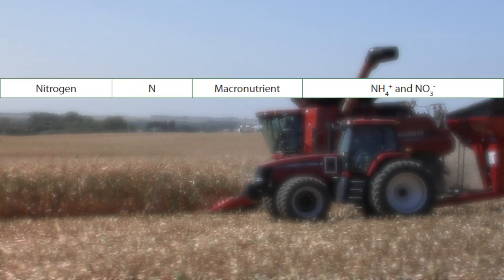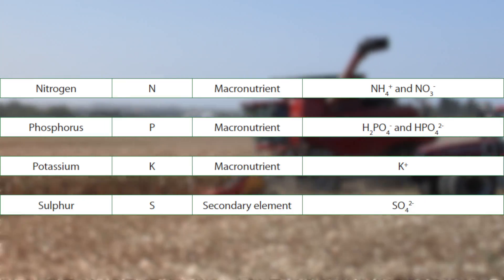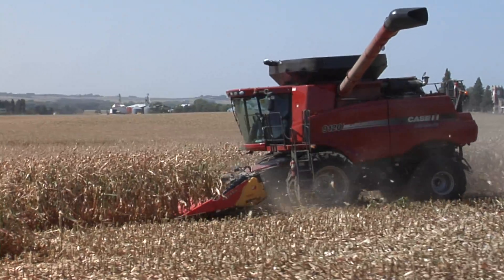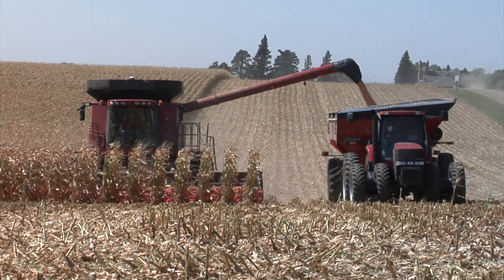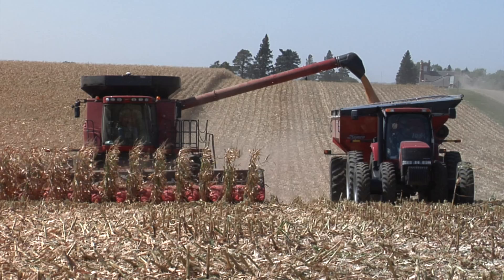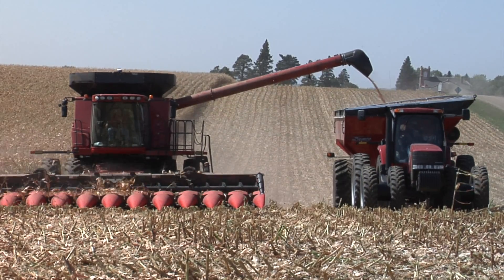Nitrogen, phosphorus, potassium, and sulfur are just four of the 17 essential nutrients. Each and all of them is required in the right amount for healthy growth of plants.